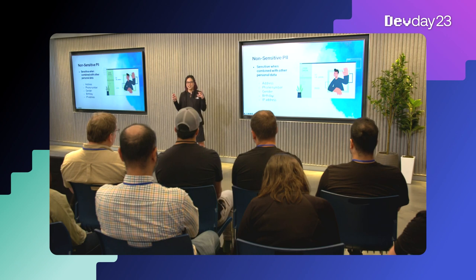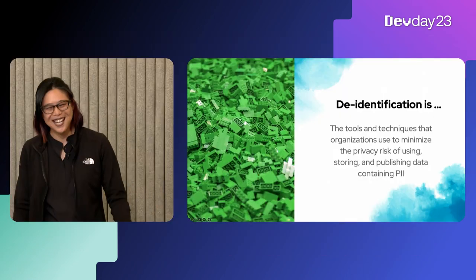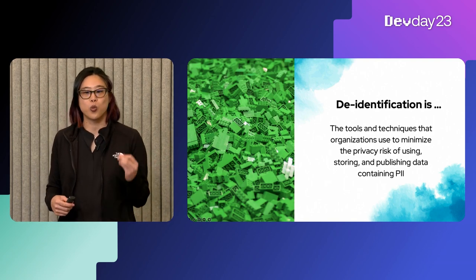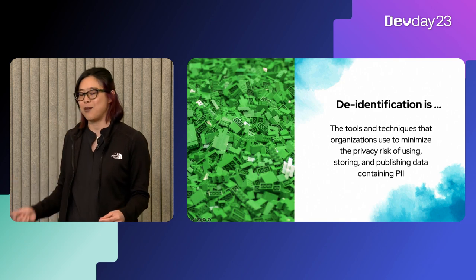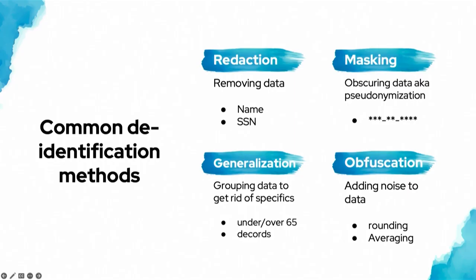To protect this data, we can use a concept called de-identification — the tools and techniques organizations use to minimize the risk of using, storing, and publishing data containing PII. Here are some common de-identification methods. The names may change depending on your industry or applicable laws, but the ideas are similar. First is redaction: the removal of data. Think of military documentation where half a letter is cut out so you can't read it — same idea. Types of data you may want to remove include name and social security number.